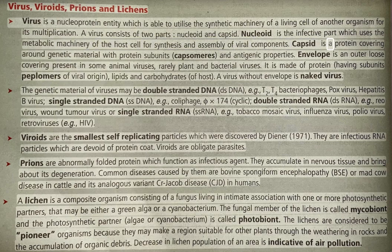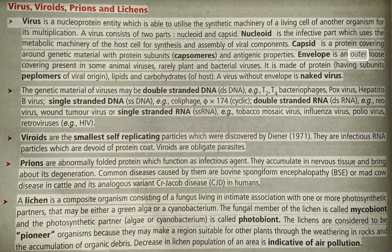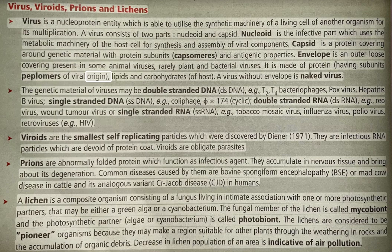The capsid is a protein covering around the genetic material, composed of protein subunits called capsomeres, and has antigenic properties. The envelope is an outer loose covering present in some animal viruses, and rarely in plant and bacterial viruses. It is made of protein, having subunits called peplomers of viral origin, and lipids and carbohydrates of host origin.